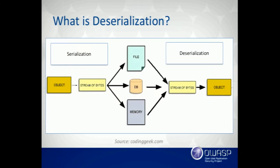Serialization is the process of taking an object within an application, breaking it up into bits, and communicating those bits — usually over a network — to another application or back to yourself. The receiving application then reconstitutes those bits back into an object using the reverse process called deserialization — like Star Trek teleportation. Most modern serializers use JSON or XML, but the very high-performance ones and those built into your language are binary.